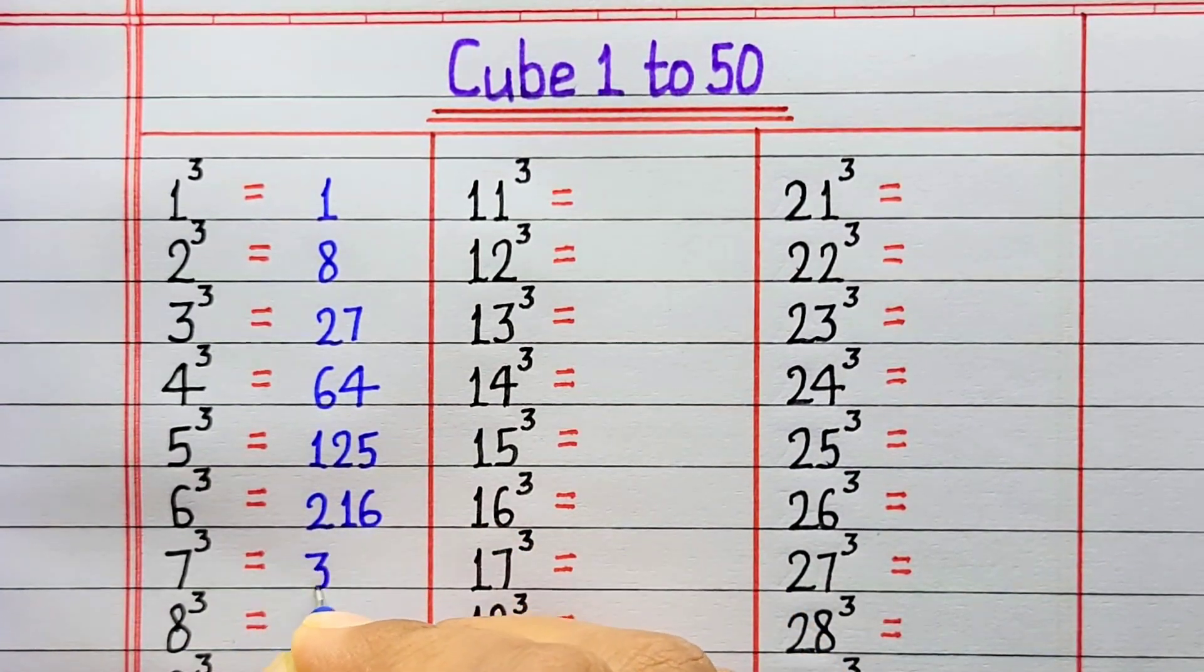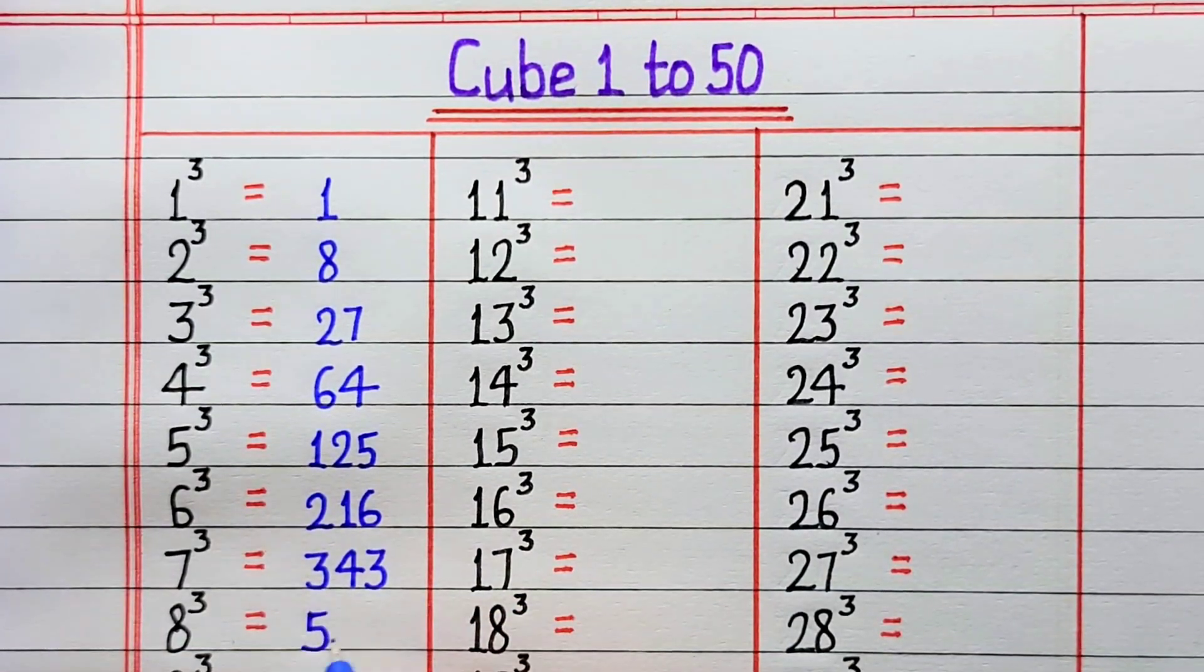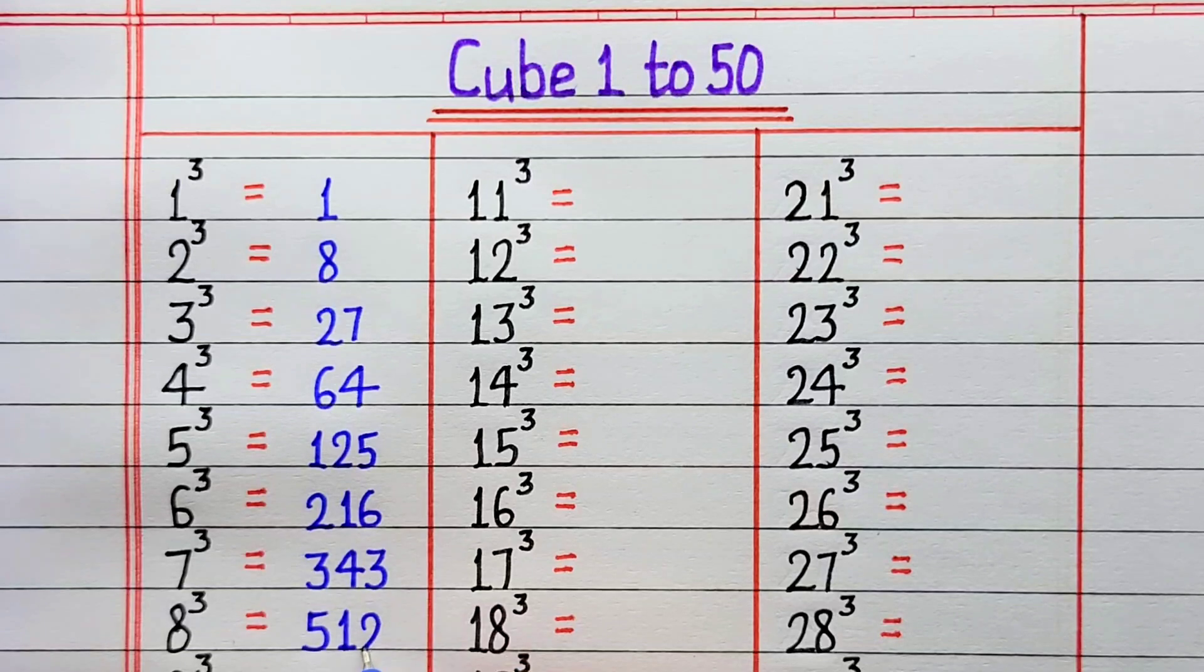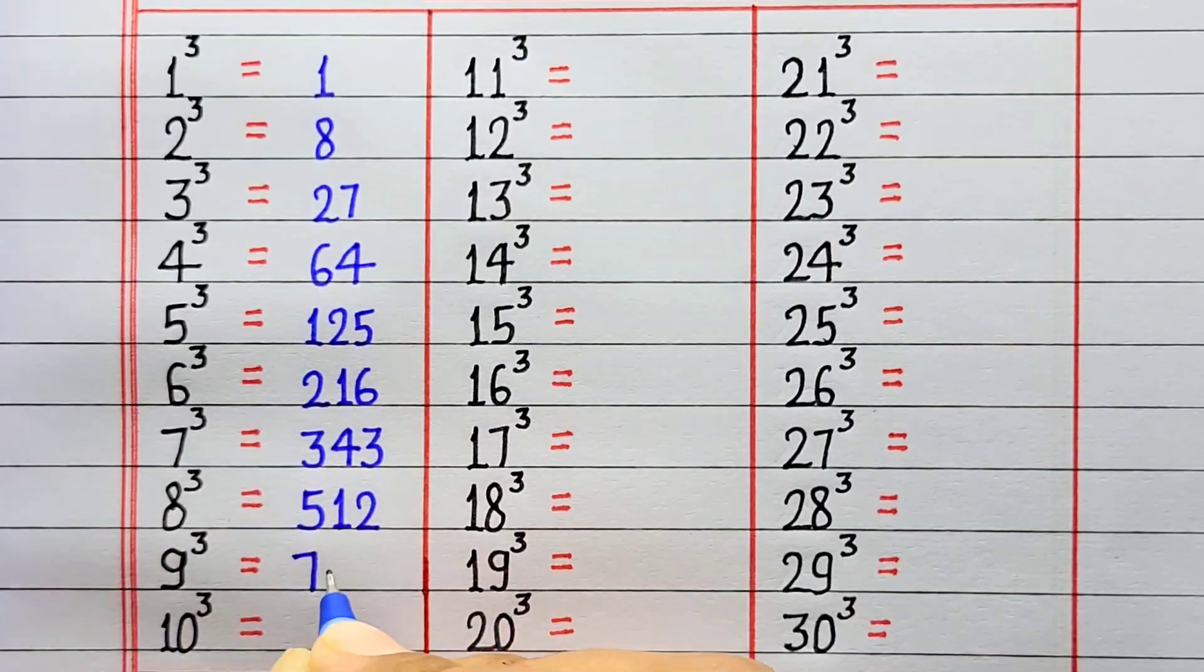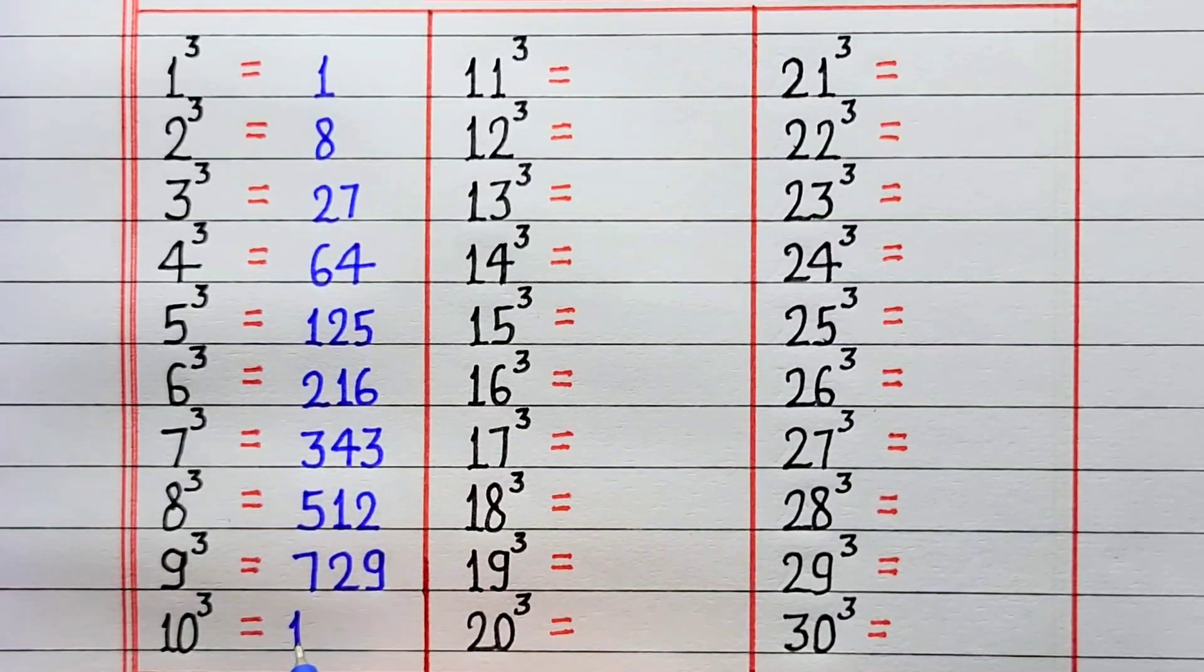Cube of 7 is 343. Cube of 8 is 512. Cube of 9 is 729. Cube of 10 is 1000.